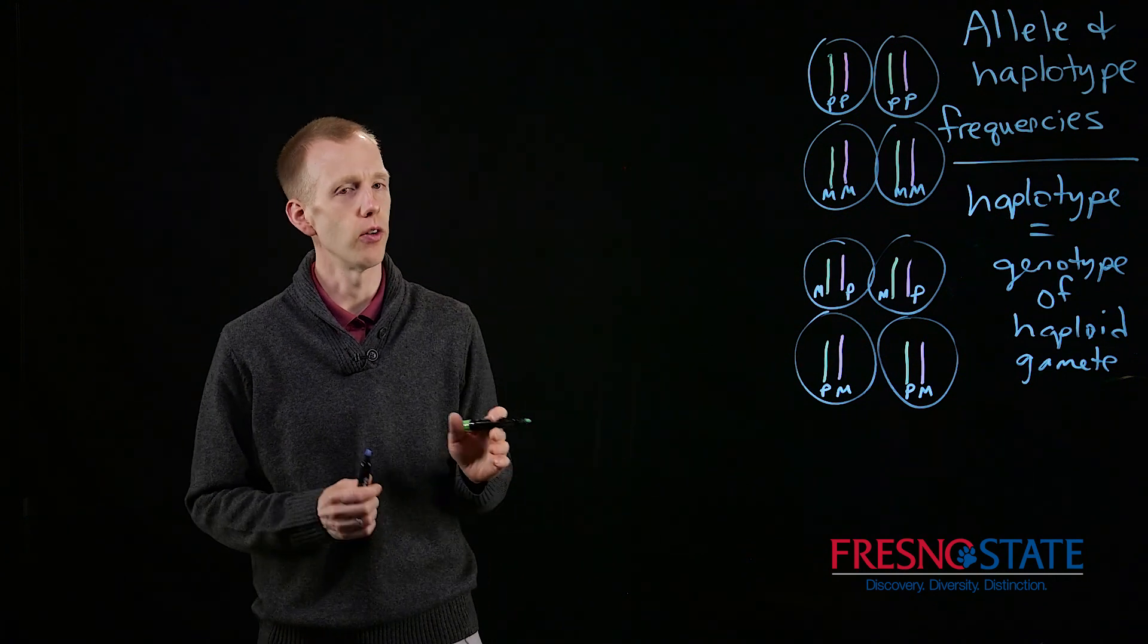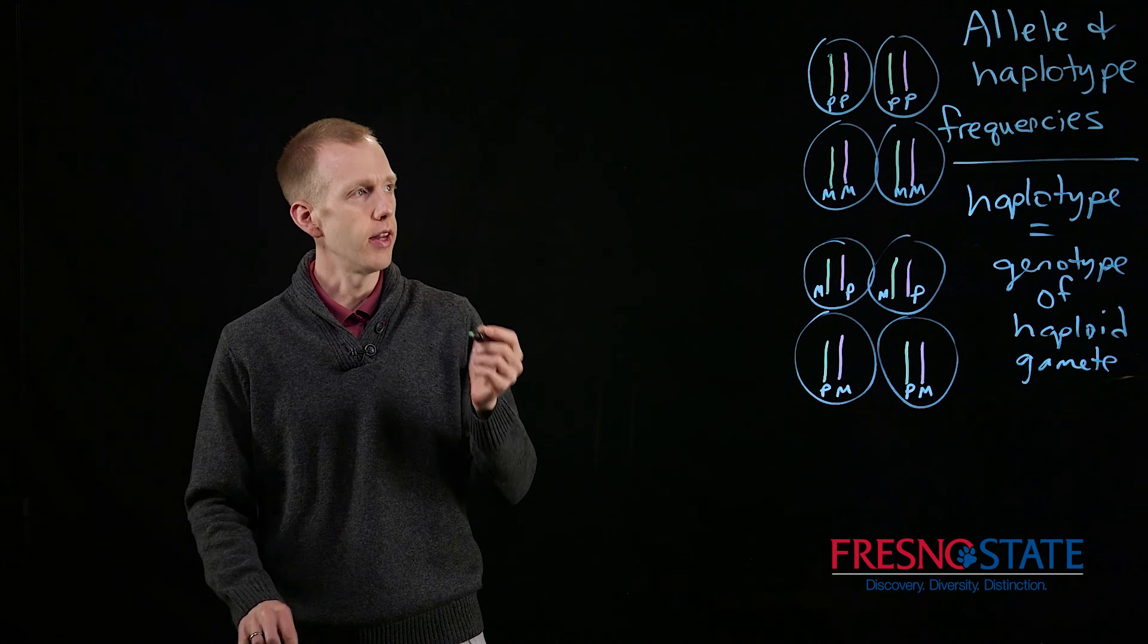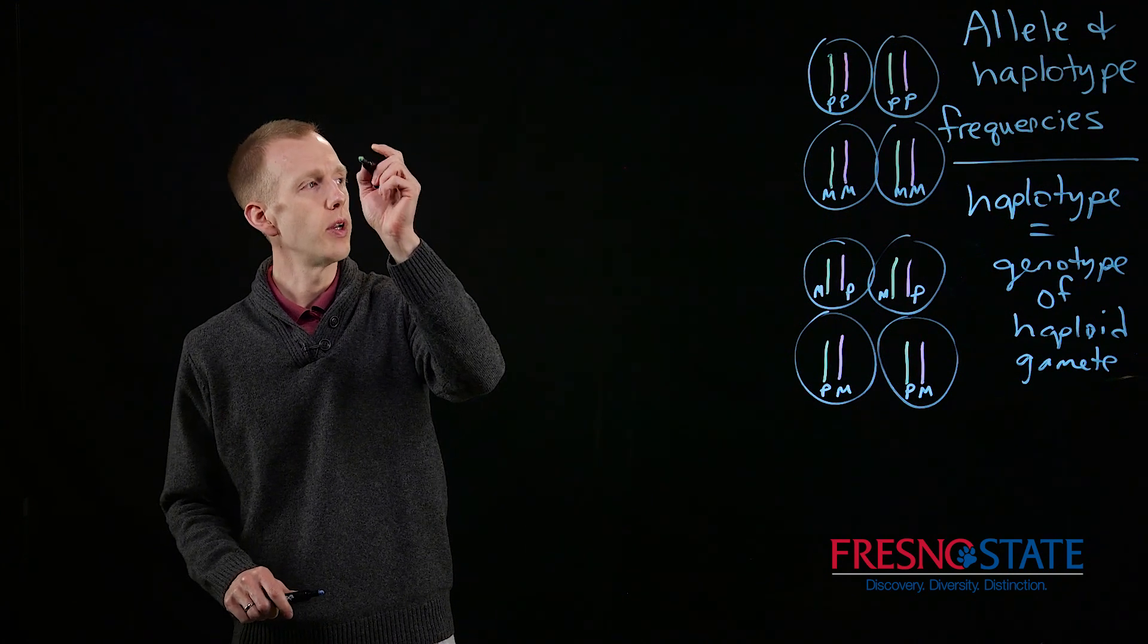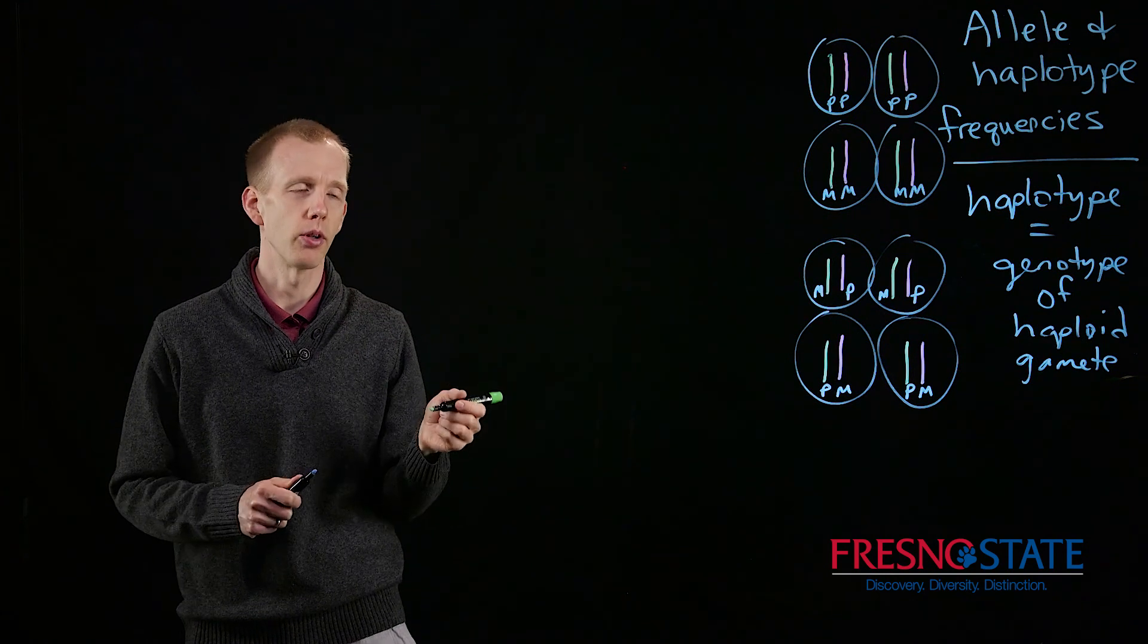So these eight nuclei shown here are the products of two different meioses. And we need to discuss the concept of allele frequencies and their relationship to haplotype frequencies.